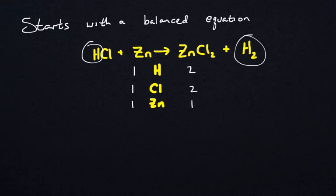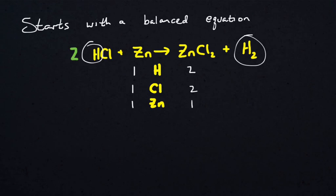I'm looking on the right and the left. There's two Hs on the right and one on the left, so what I need to do is add a coefficient of two in front of the HCl. I can only put numbers in front of compounds, never as subscript. Now I've got to go through and update my chemical inventory — there's now two hydrogens and there's now two chlorines.